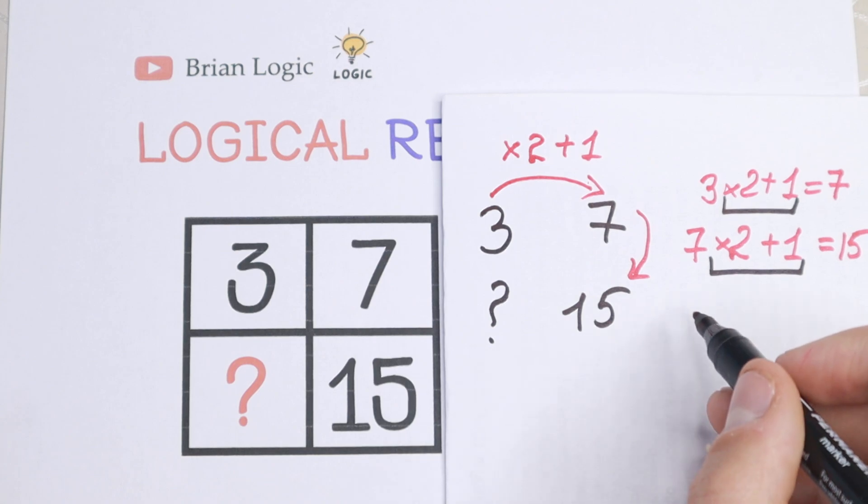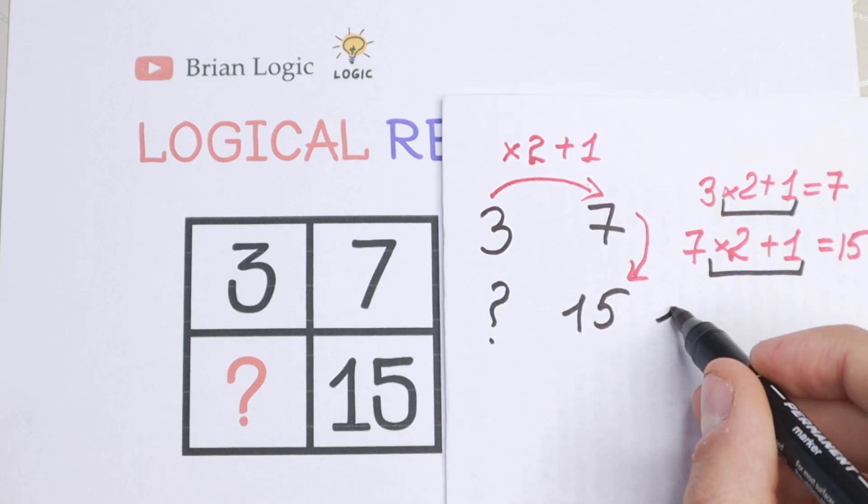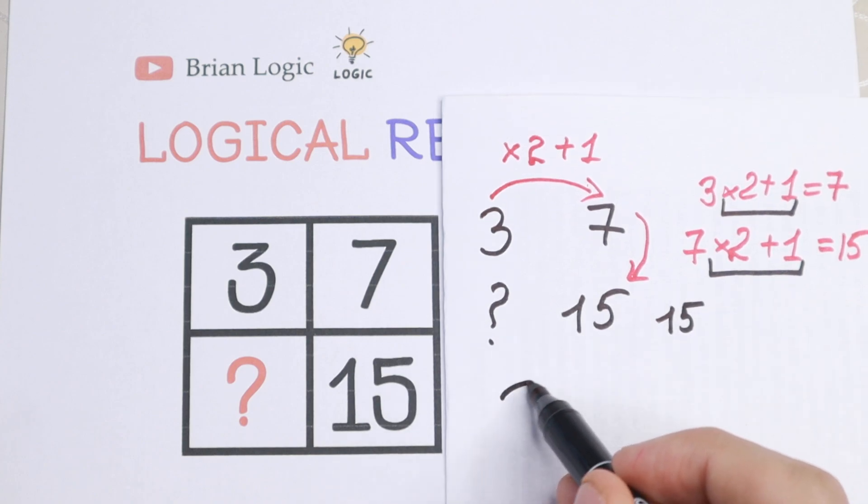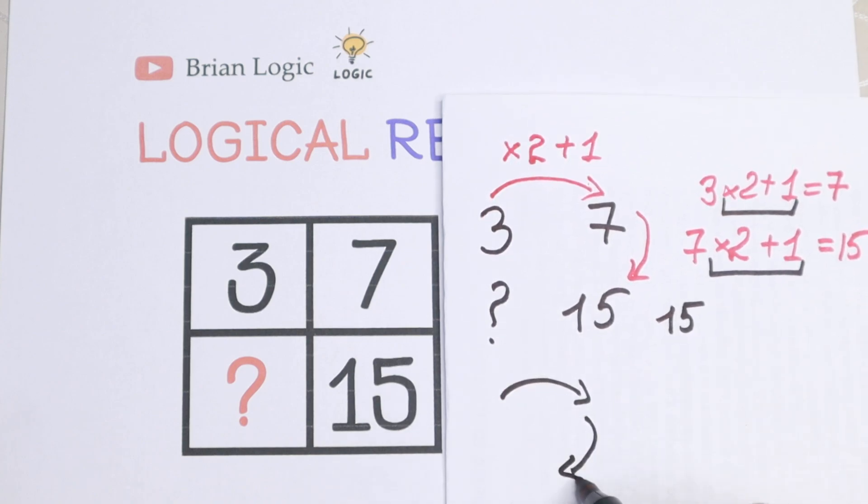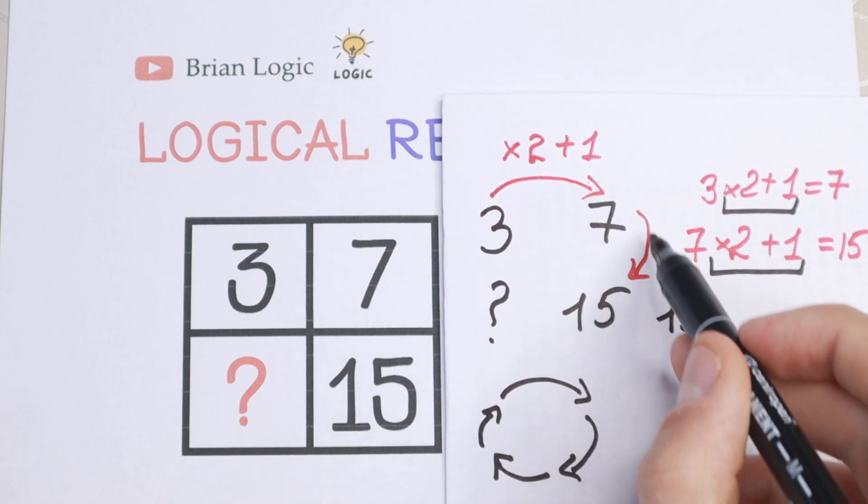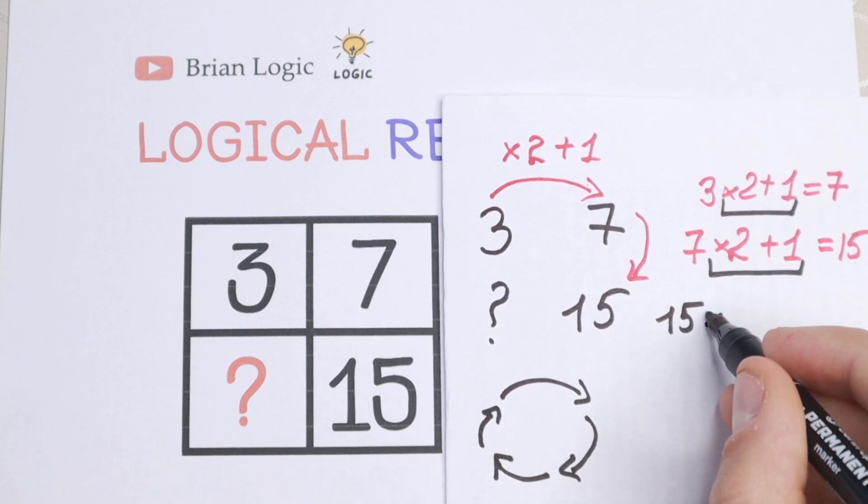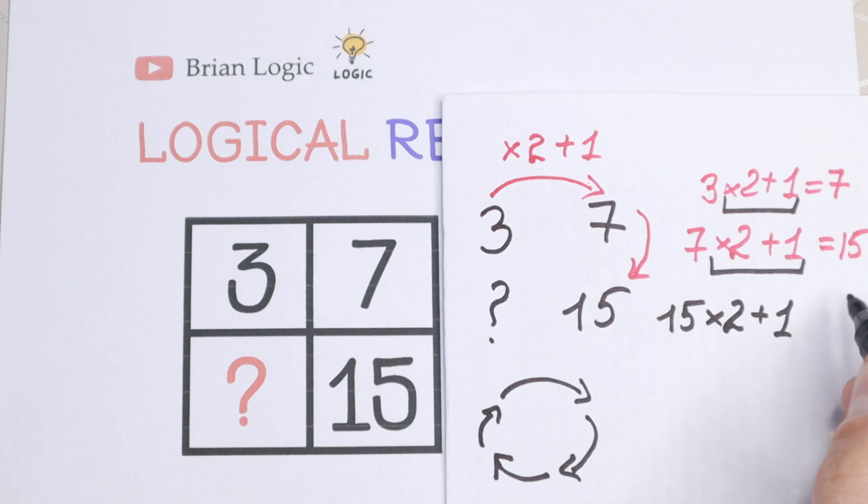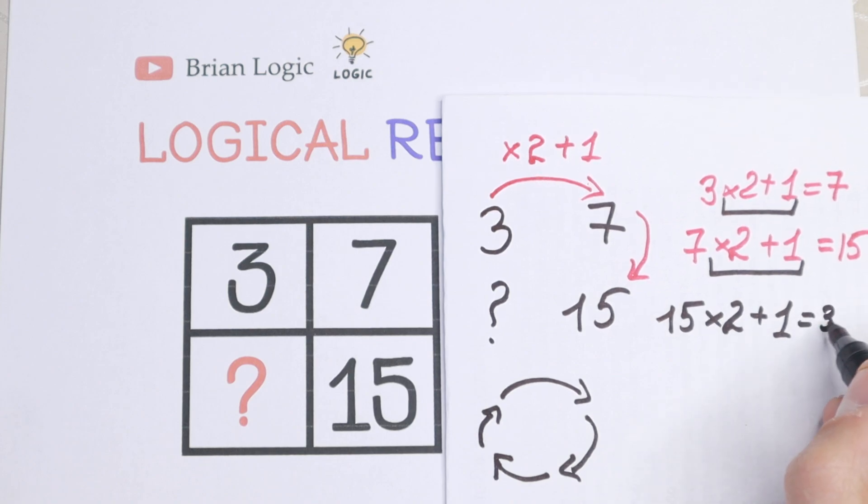So it's not hard to say that we need to multiply by 2 and add 1 to this 15. Because this looks like that. Right here, right here, right here, and right here. So like a circle. Like a circle. So multiply by 2 and add 1. We will have 30 plus 1. We will have 31.